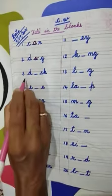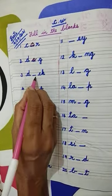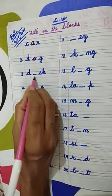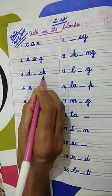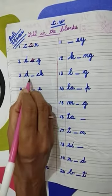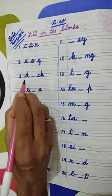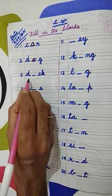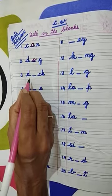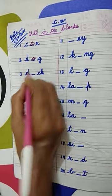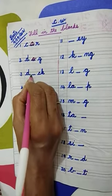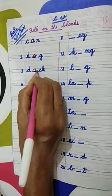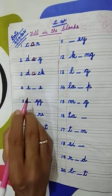Number 3: D-C-K. One letter is missing here. This is the spelling of duck. Which letter is missing here? Very good. Letter U. You have to write here U and complete the weight. Duck.